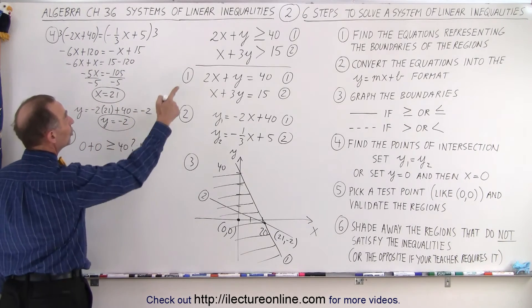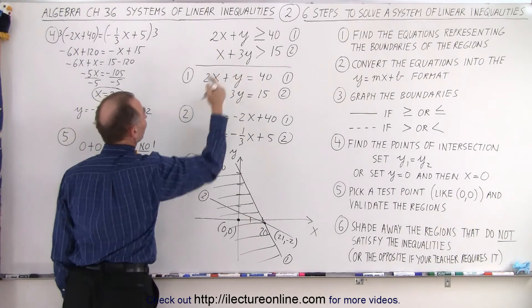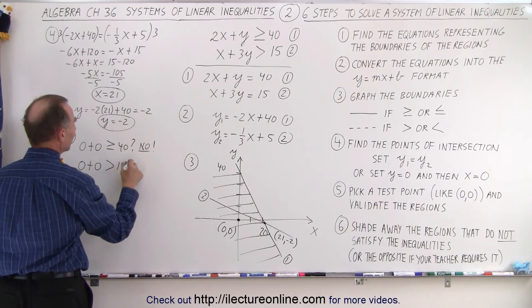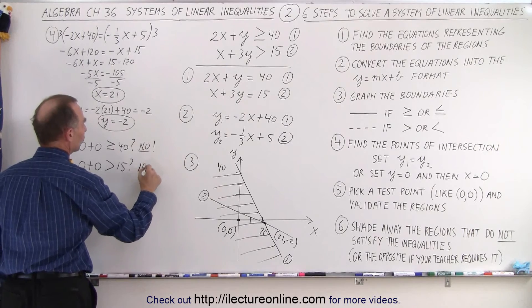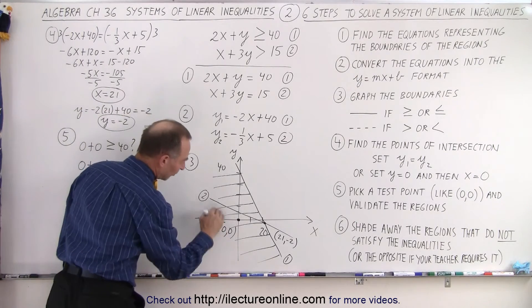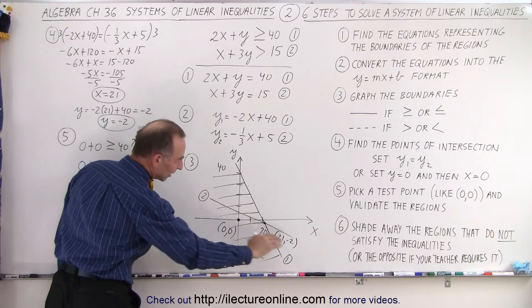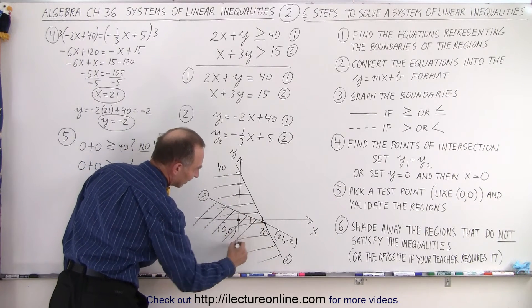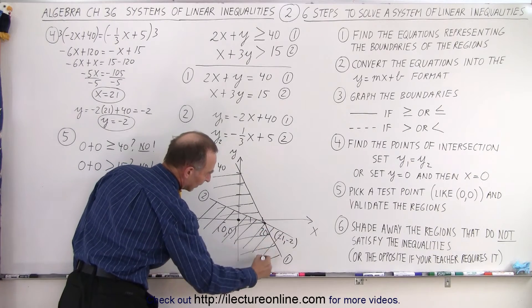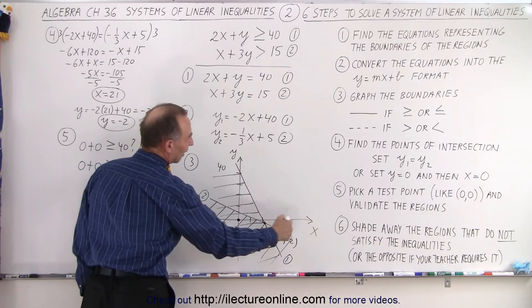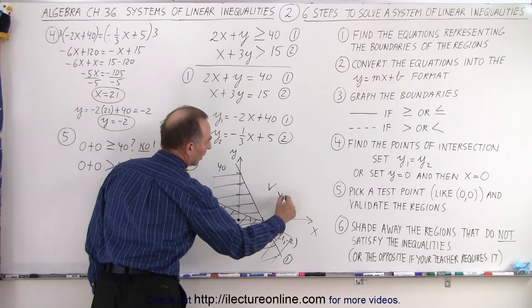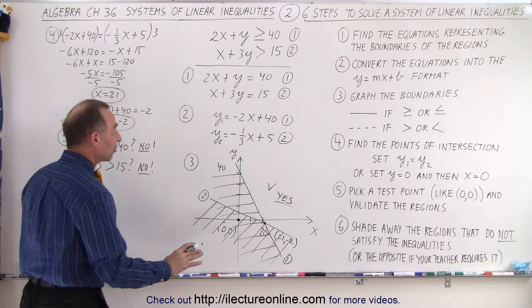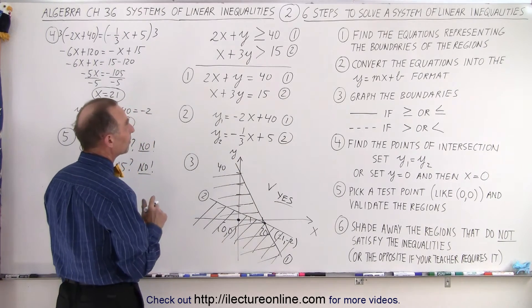So now we'll go to equation number two. And again, we plug in 0,0 for x and y. So 0 plus 0. Is that greater than 15 question mark? And the answer again is no. So again, relative to the second line, we picked a point that is not in the correct region, so we're going to get rid of that side of the second line, like this. And notice there's only one region left that is not being crossed out, and so that's the region that satisfies both of the inequalities at the same time.